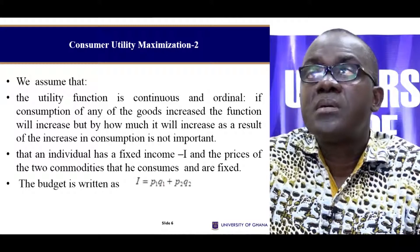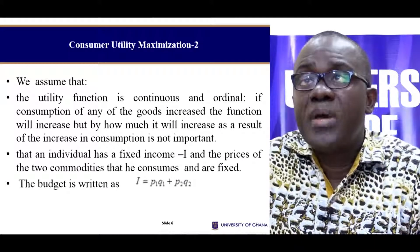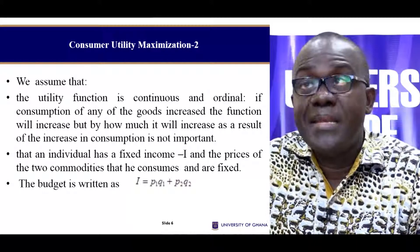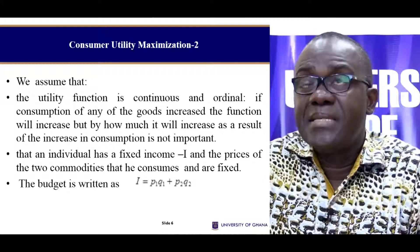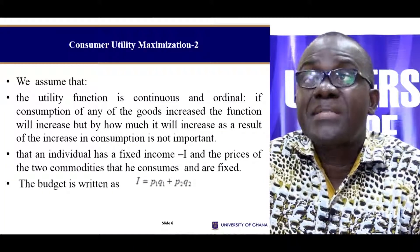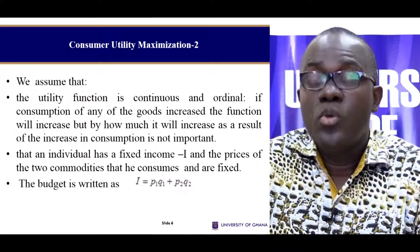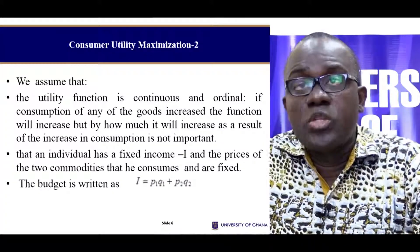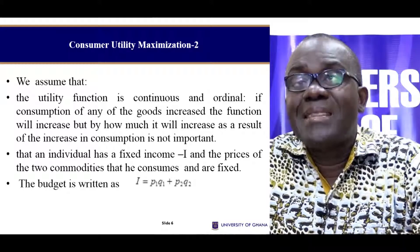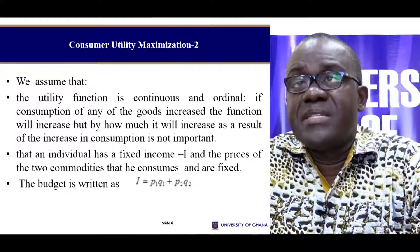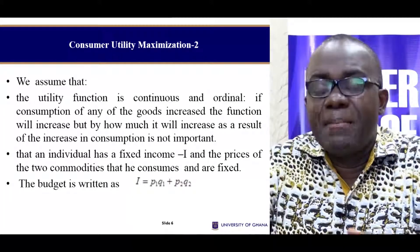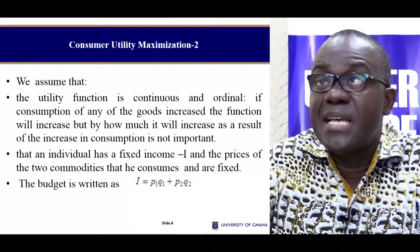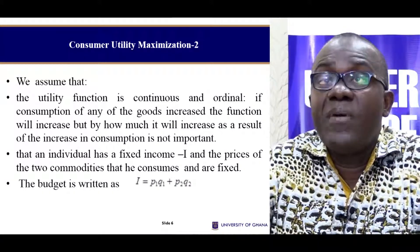It's quite important to know that this utility function is continuous and also ordinal in nature. The ordinal nature means that it increases, but by how much it increases we don't know. We are able to make a choice — if we have one consumption set versus another, we can know that this one gives us more satisfaction than the other. But by exactly how much satisfaction, we cannot measure. That explains the ordinal nature of our utility function.